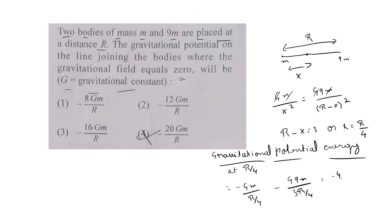This can become minus 4Gm by R minus 12Gm by R. I'm just doing the cancellation in my head. Minus 16Gm by R is the right answer. See you in the next video.